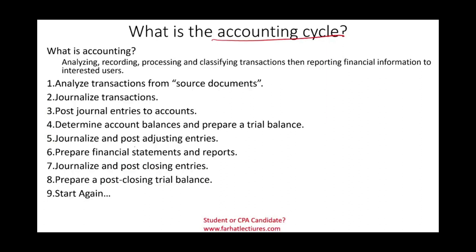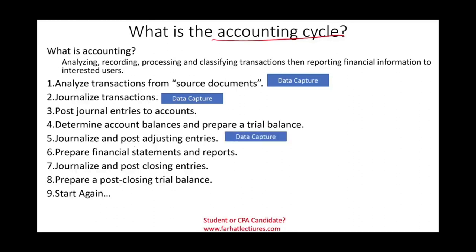From an IT or accounting information system perspective, in steps one and two we capture the data. We look at the transaction and capture the data — this could be done manually, by writing it in books, but today this information is captured automatically through the accounting information system. Every time we journalize, it is considered data capture — the initial journal entry is the initial place where we enter the information.